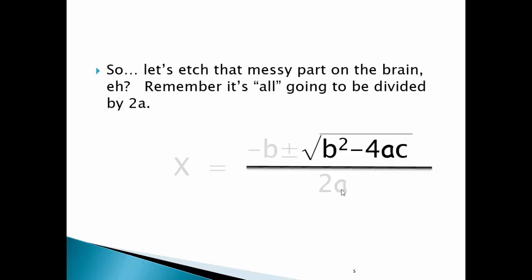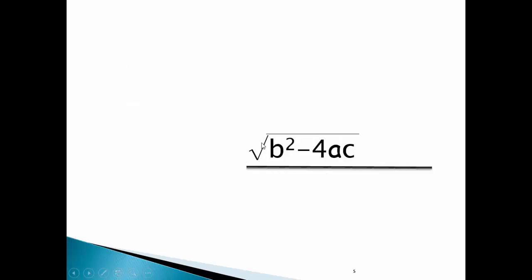Remember, it's all going to be divided by 2a. The square root of b squared minus 4ac. The square root of b squared minus 4a. The square root of b squared minus 4.